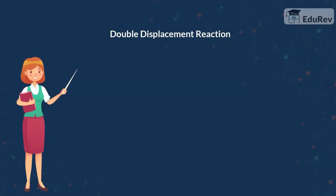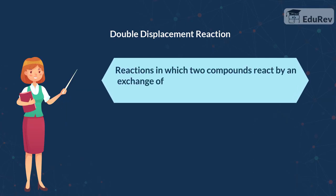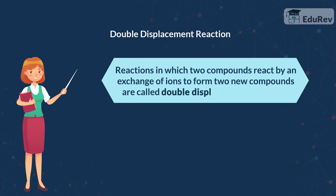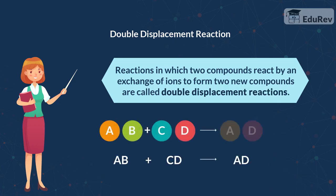Let's look at what is a double displacement reaction. Reactions in which two compounds react by an exchange of ions to form two new compounds are called double displacement reactions. In case of a double displacement reaction, AB reacts with CD to give AD and CB.